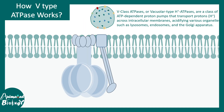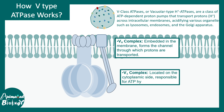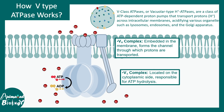V type ATPase is enriched in vacuolar membranes, especially lysosomes, where their job is to acidify. They have two major components: the V0 complex embedded in the membrane and the V1 complex located on the cytoplasmic side. Their job is to transport protons against the concentration gradient — pumping more and more protons into an already proton-rich location. ATP hydrolysis provides the energy to move ions against the concentration gradient, which is how V type ATPase works.